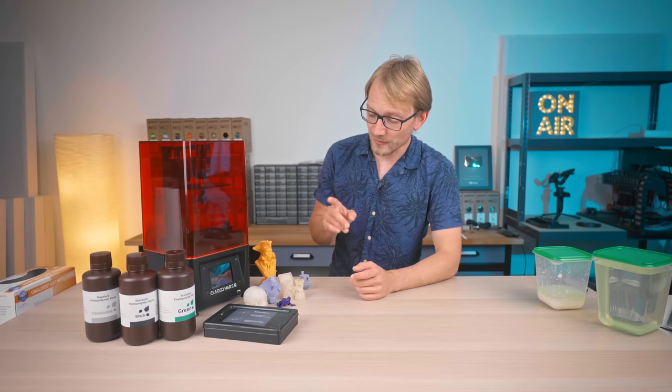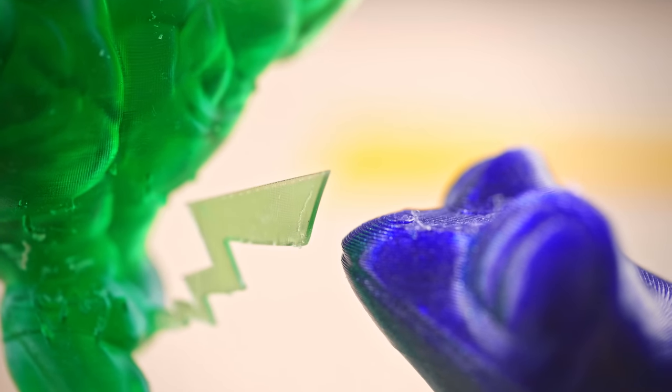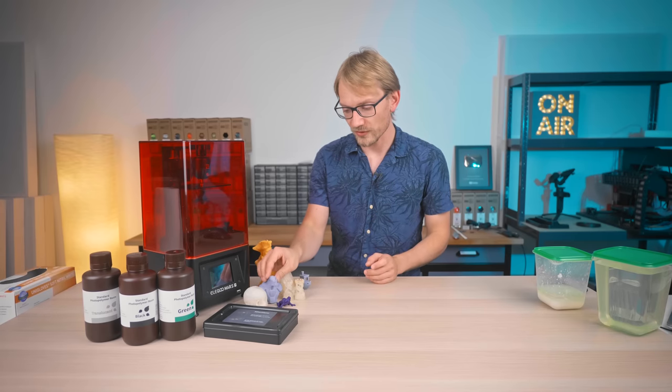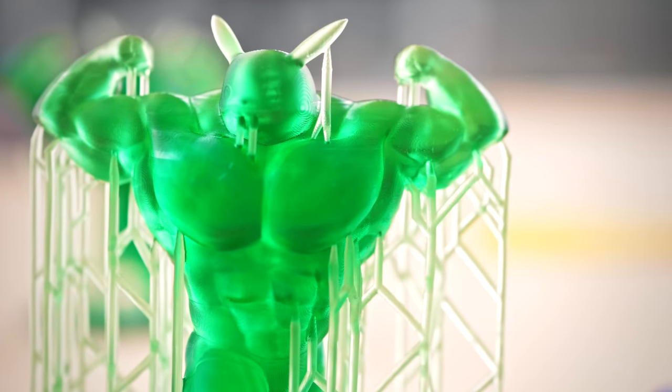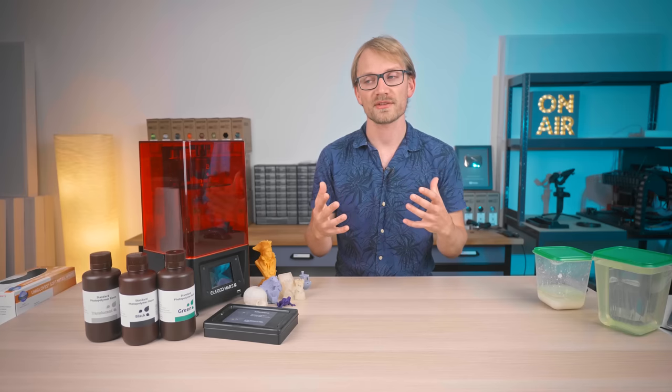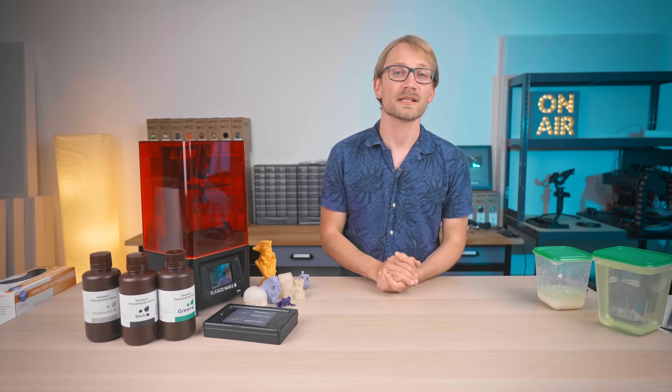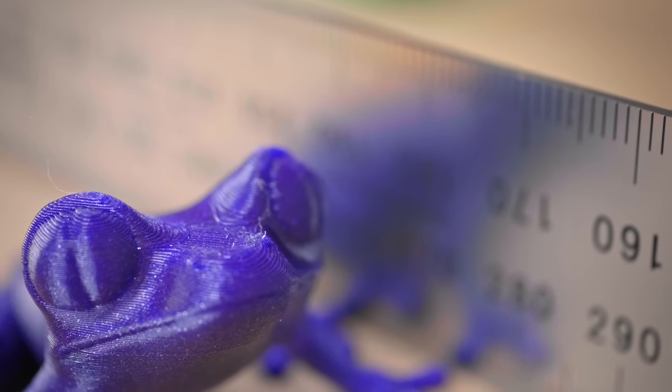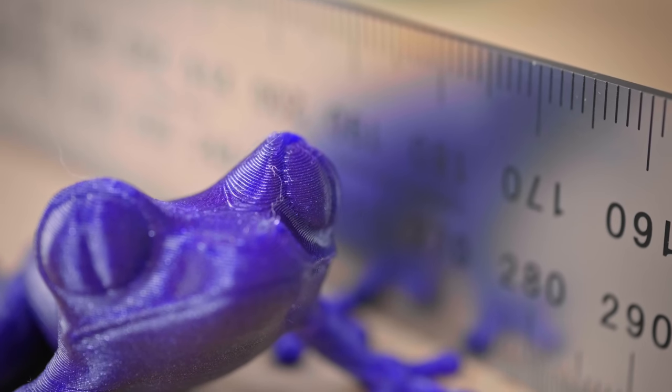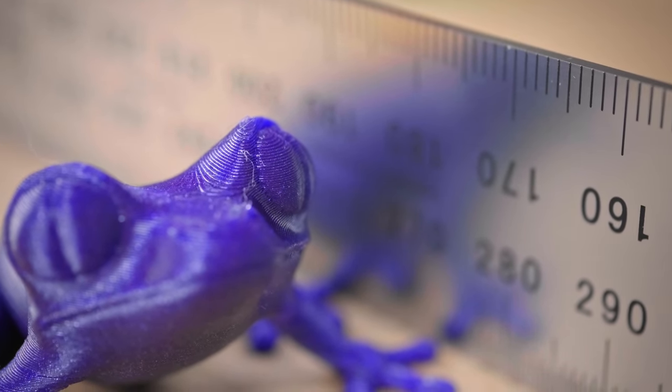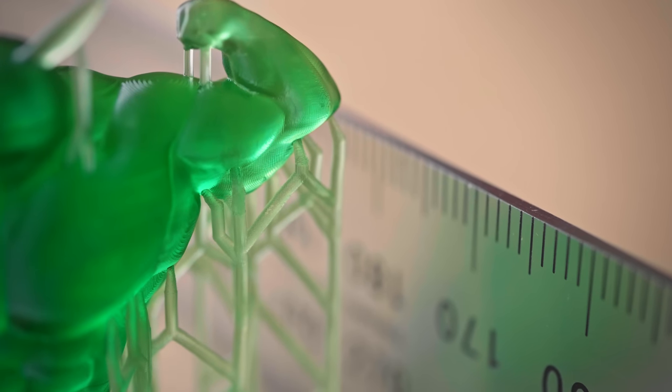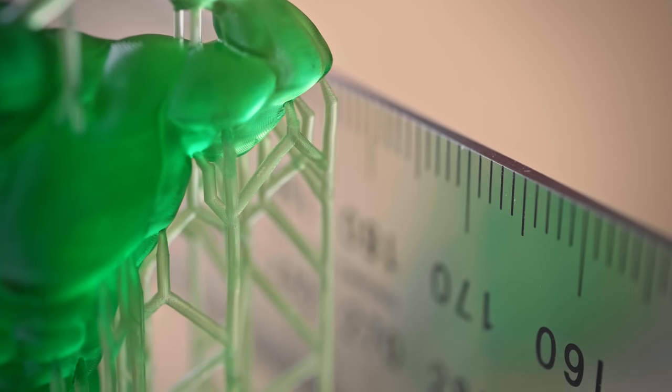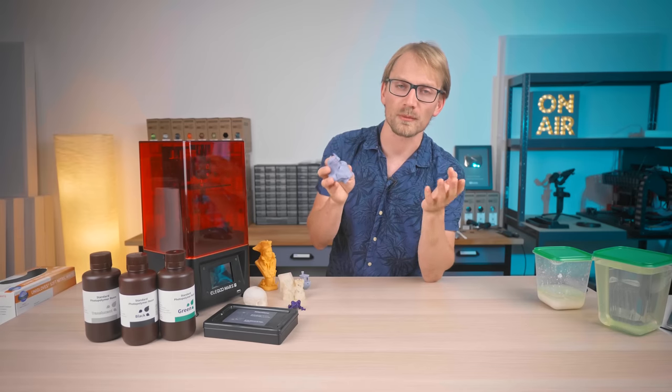When you look at the prints that filament and resin printers produce, it's pretty obvious that they are very different beasts. A resin printer is capable of producing super-smooth surfaces and fine details that a filament printer wouldn't be able to resolve with its comparatively massive nozzle and large layer heights. The smallest features a normal filament printer can produce are at least about half a millimeter large. If you want them to look good, it's more like a full millimeter. A resin printer, on the other hand, can work an order of magnitude more finely at just 0.05 millimeters for the smallest details it can reproduce under optimal conditions.